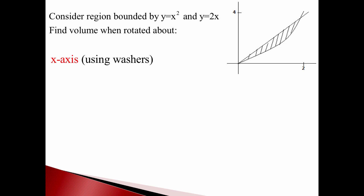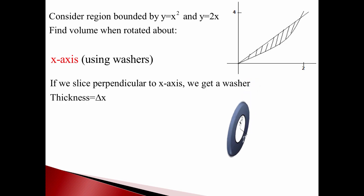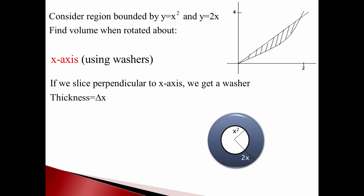The idea is to slice this thing perpendicular to the x-axis, and when we do that we get a washer. The thickness of this washer is delta x — we slice, slice, slice, and the thickness of each slice is delta x. When we rotate that little slice around, it comes out of the screen and goes back in, giving us a washer. I can pull this washer out and turn it so we can see it face on. It has a thickness of delta x and an area we can figure out from the picture.